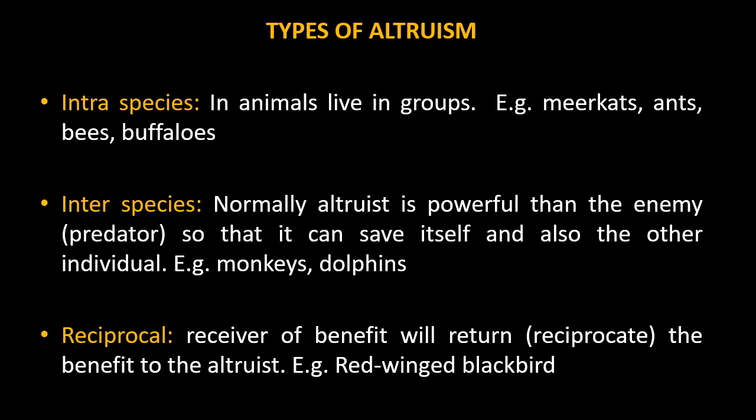The third type is reciprocal altruism, where a receiver of benefit will return or reciprocate the benefit to the altruist. It is a special type of altruism where the benefit to the altruist will be returned — maybe later — and it is mostly not immediate. For example, it is found in the Red-Winged Blackbird, which we will discuss later.